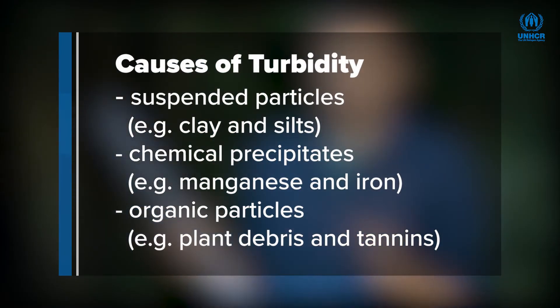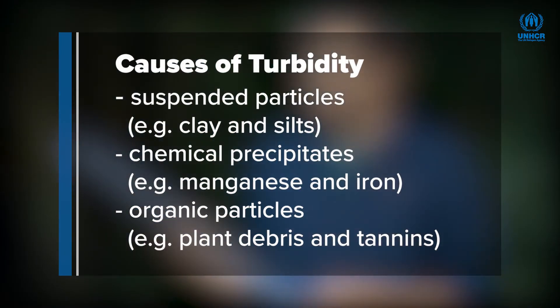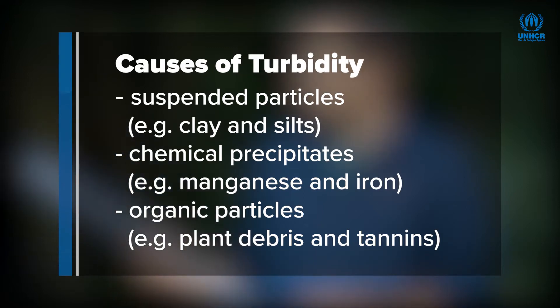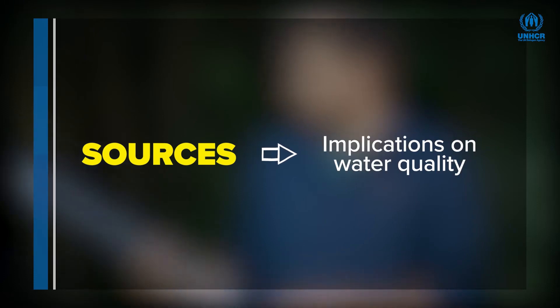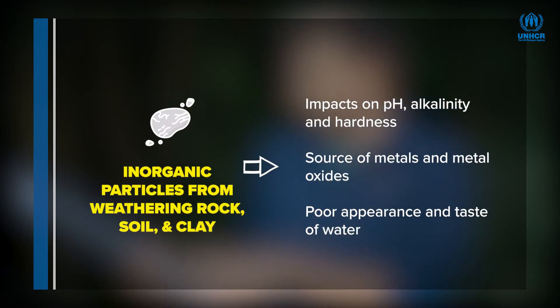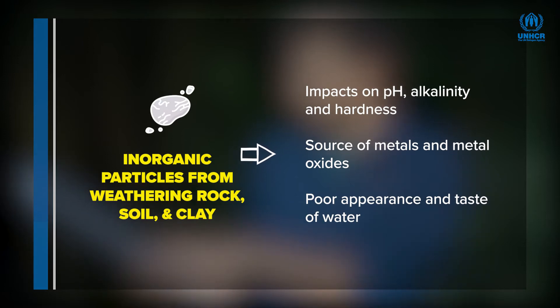Turbidity in water is usually caused by suspended particles such as clays and silts, chemical precipitates such as manganese and iron, and organic particles such as plant debris and organisms. The sources of turbidity are diverse, and many of the constituent particles such as clays, soils, and natural organic matter are harmless.